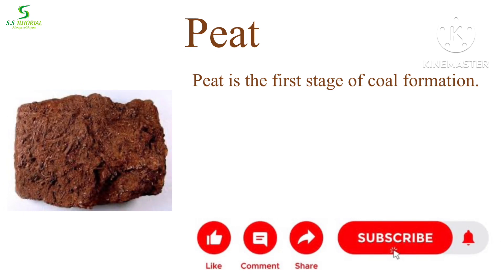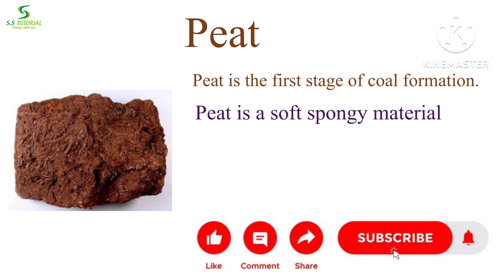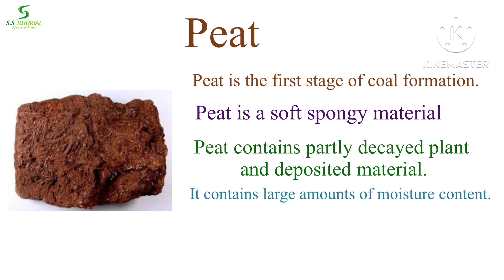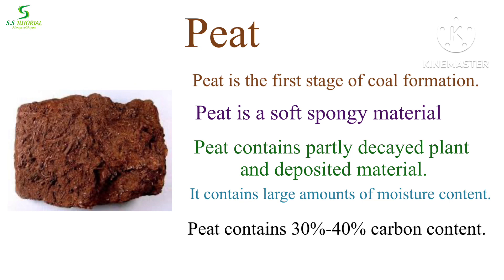Peat is the first stage of coal formation — the first stage of transformation from dead plants into coal. It is not considered coal, though it can burn. Peat is a soft, spongy material in which the presence of plants is easily recognizable. It contains partly decayed plant matter and deposited materials, and has a large amount of moisture content, so it must be dried before use. It has very low carbon content, only 30 to 45 percent, so it is very rarely used in power generation.